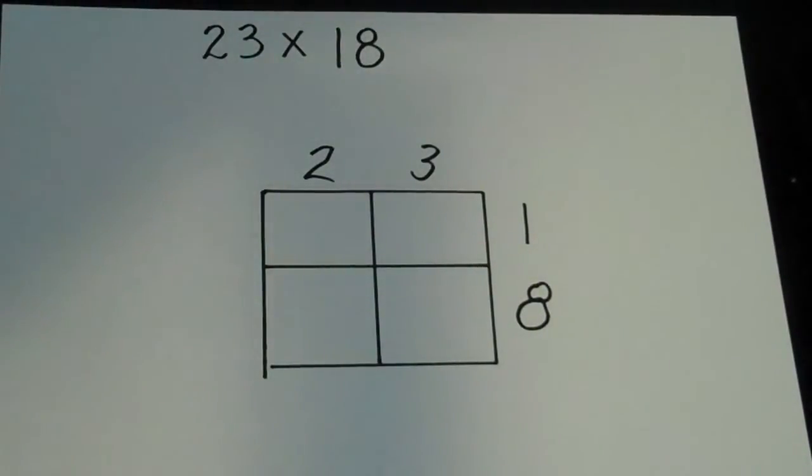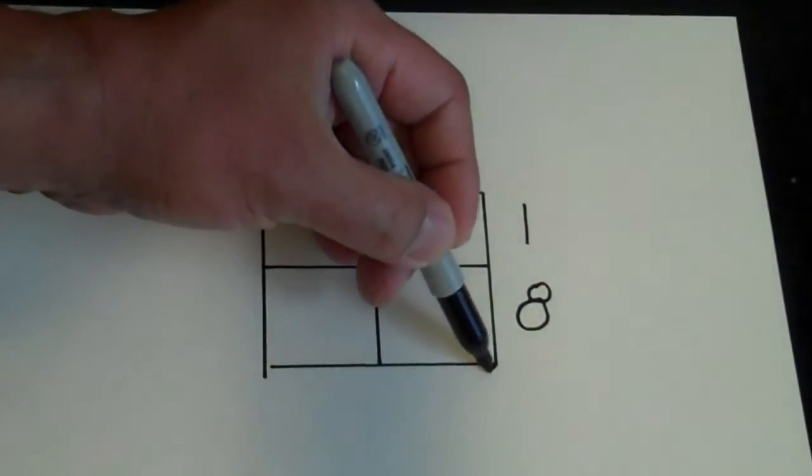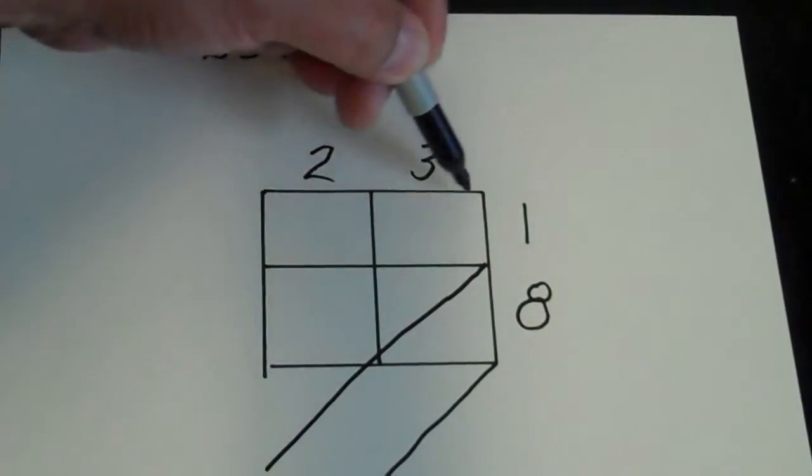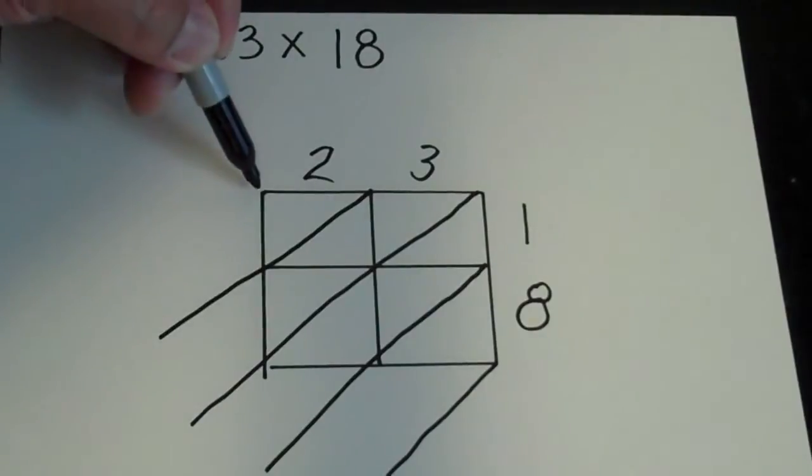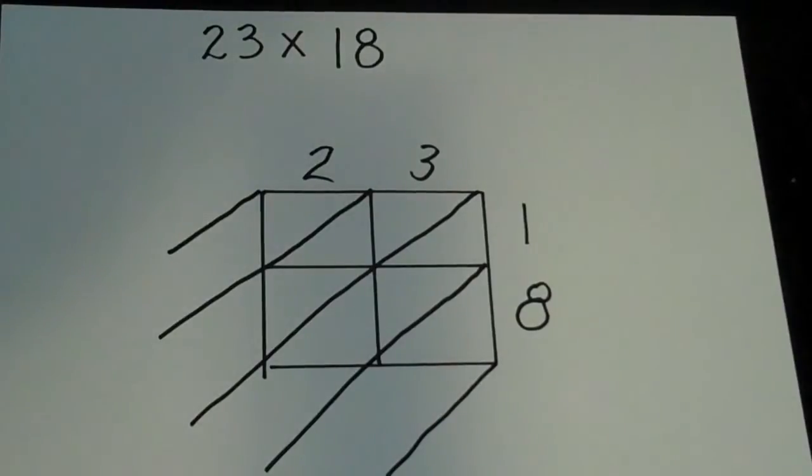Now what I'm going to do is get my box ready to actually multiply, so watch what I draw. I'm gonna draw a bunch of diagonal lines. Notice it looks like I'm kind of connecting all the corners here. That looks cool, okay.